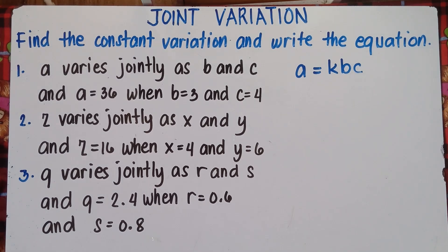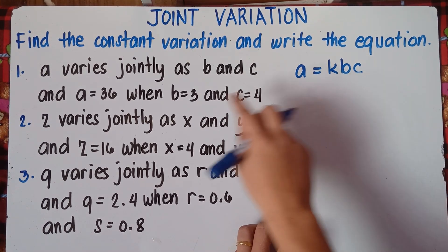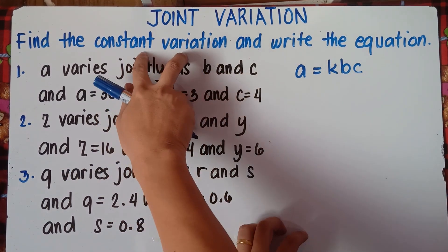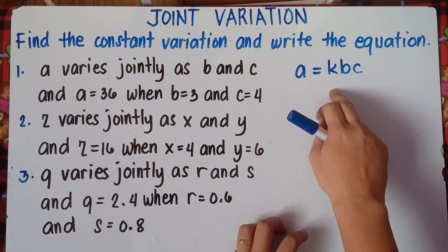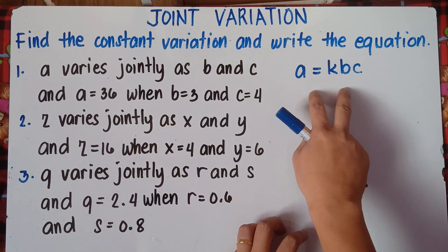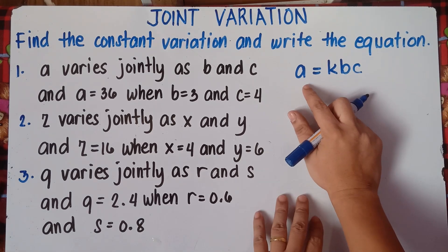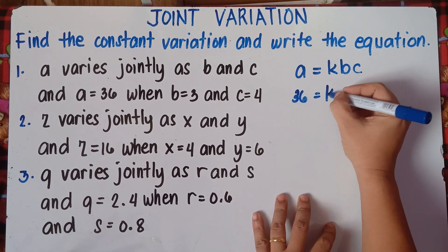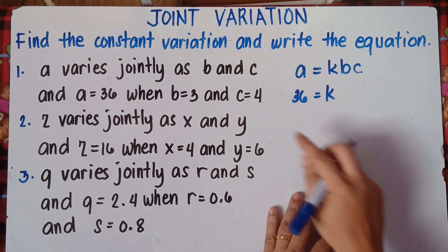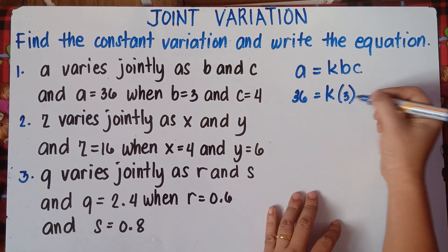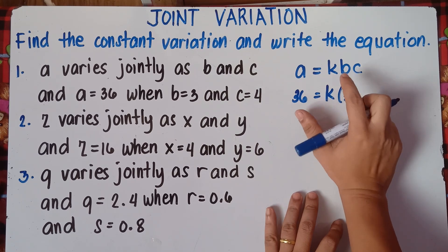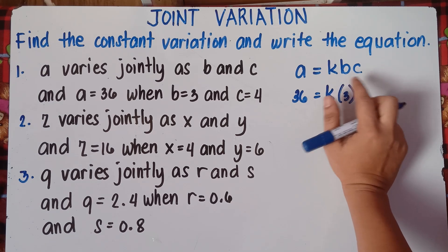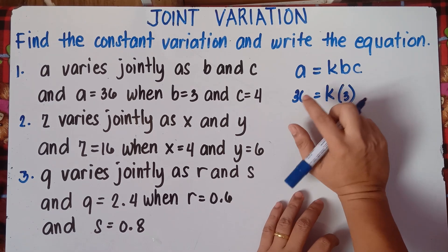To find the constant of variation, you just need to substitute the values of A, B, and C. Once you get K, that is the constant of variation. Then substitute K back into the equation. Our A is 36, so 36 equals K times B times C. Remember, if you have variables close to each other, it means multiplication. B is 3 and C is 4.